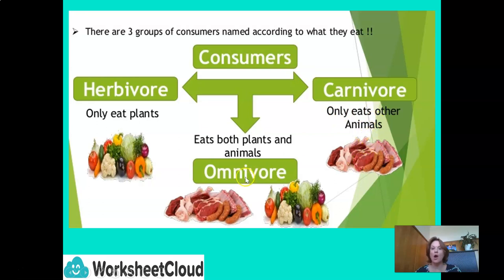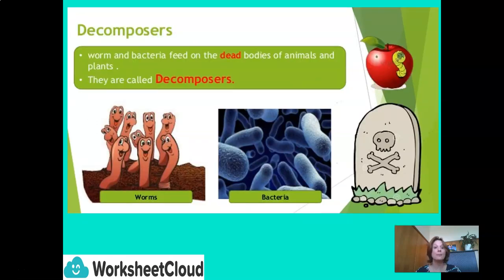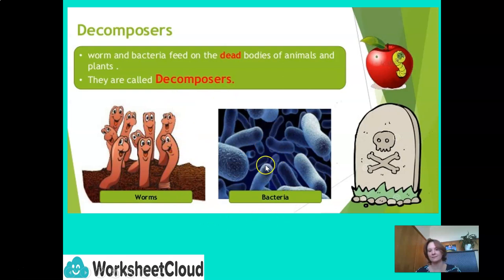Those are simple terms you would have already learnt in Grade 5 — just a little recap. Decomposers are things like your worms and bacteria, and they feed on the dead bodies of animals and plants. We also spoke about different microbes in food processing — these ones are the good ones, breaking down plant and animal matter.